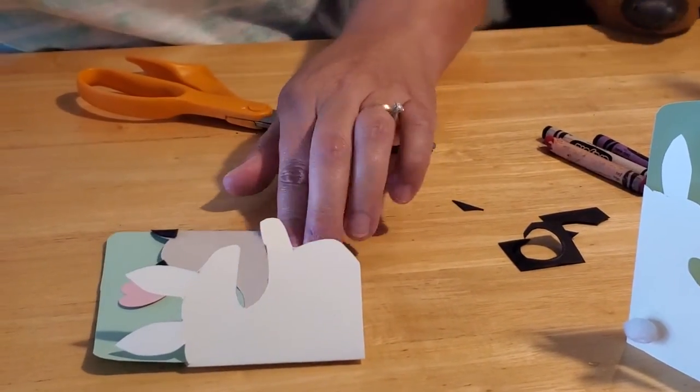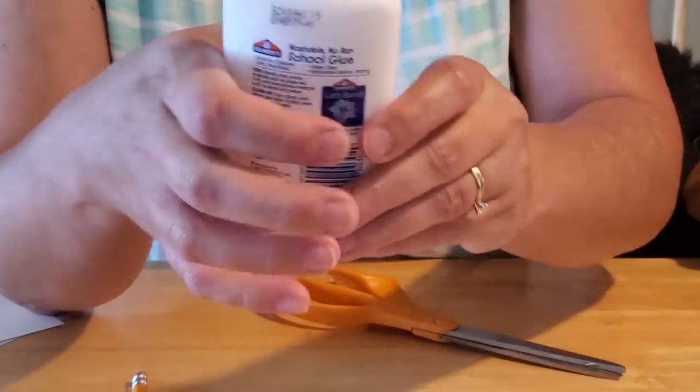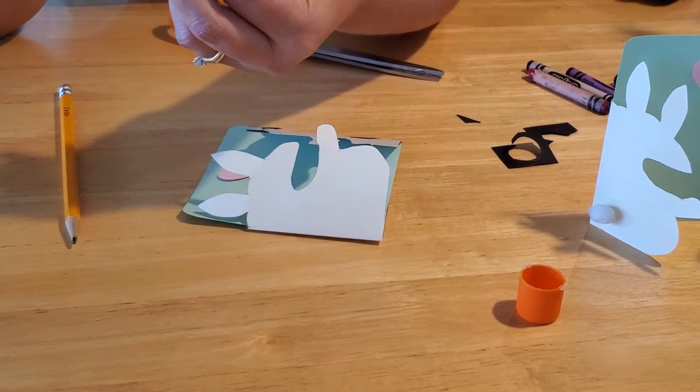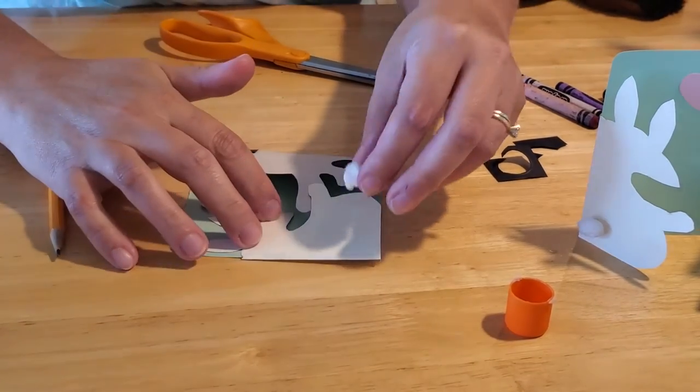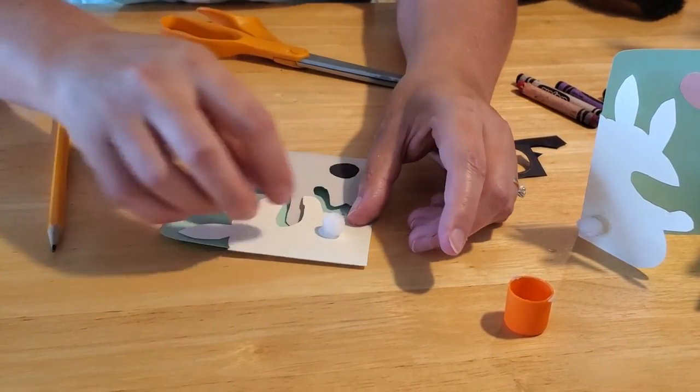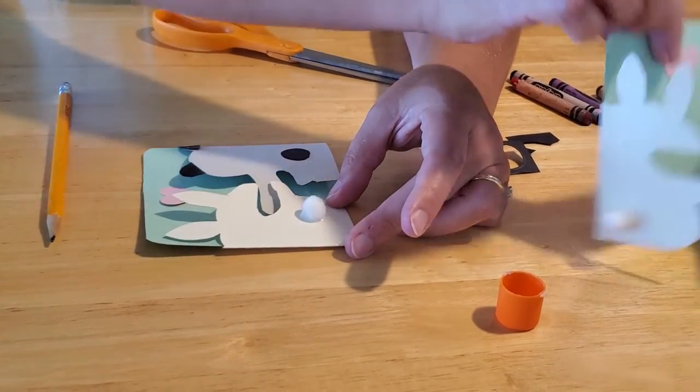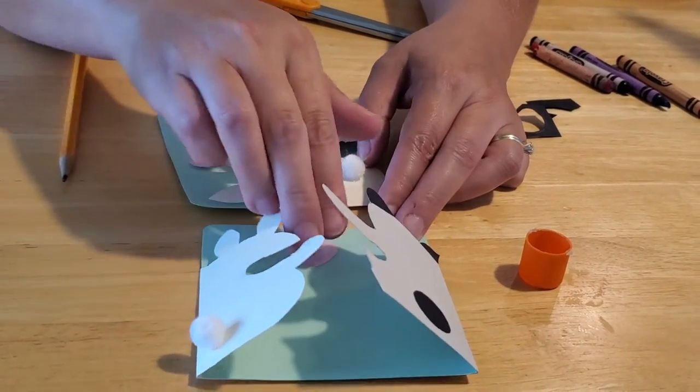Now for our bunny, we're going to use regular glue because we want our pom-pom to stick. I'm just going to put a little bit of glue on there, and then push him in there. And you're going to want to let that sit until it thoroughly dries. And then you have your finished bunny card.